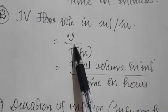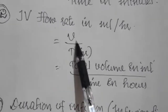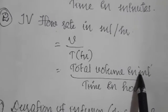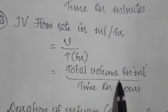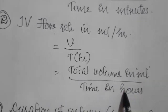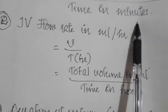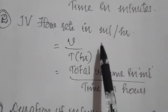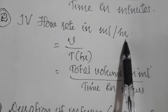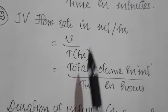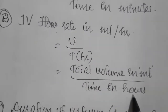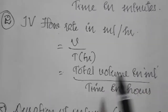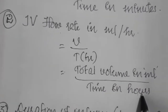The second formula is IV flow rate in milliliter per hour. The formula is V divided by T, where V is the total volume of fluid in milliliter, and T is time in hours. For drops per minute we use time in minutes; for mL per hour we use time in hours. So the formula is: total volume to be infused divided by time in hours.